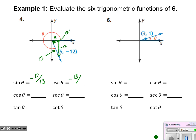Cosecant is just the reciprocal of sine. Cosine will be positive 5 over 13 — that's adjacent over hypotenuse, or x over r, since that 13 is really the radius of the circle being traced. Secant is its reciprocal. Tangent is opposite over adjacent, or y over x: negative 12 over 5, which is negative 12 fifths. That makes sense — look at how steeply negative the hypotenuse of that reference triangle is going. Cotangent is its reciprocal: negative five twelfths.